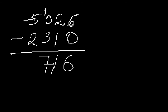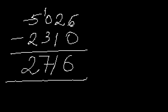So 5 minus 3 — we get 2. The answer is 2716, which we get by doing the long subtraction.